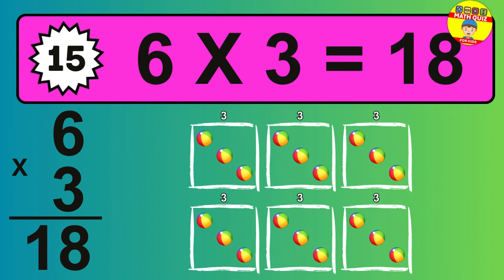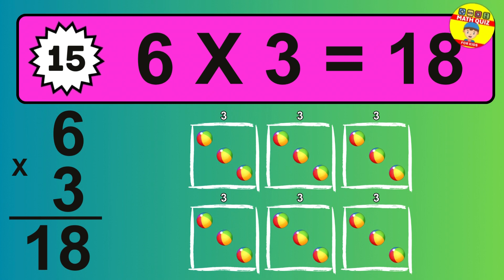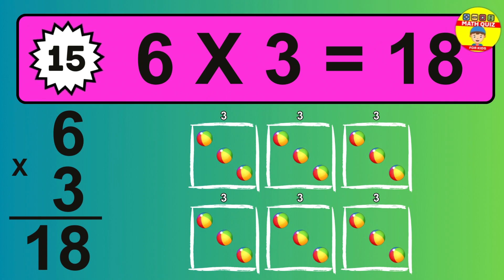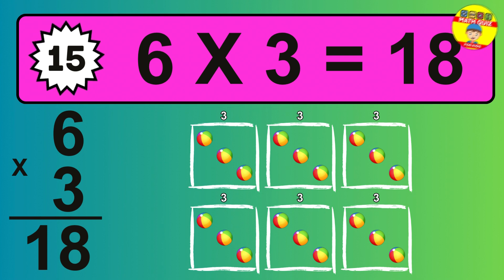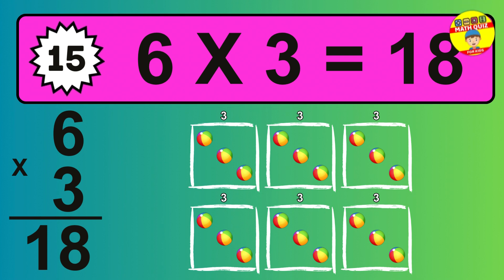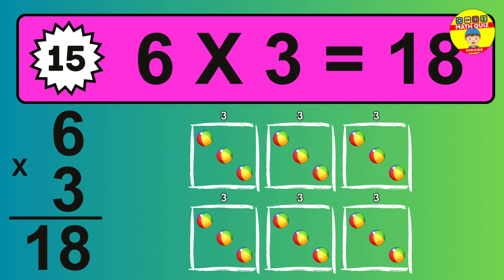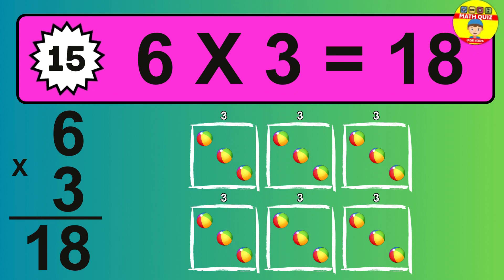Question 15. 6 times 3 equals what? The answer is 6 times 3 is 18. To calculate, we have 6 groups with 3 balls each one. So how many balls do we have? 18 balls.